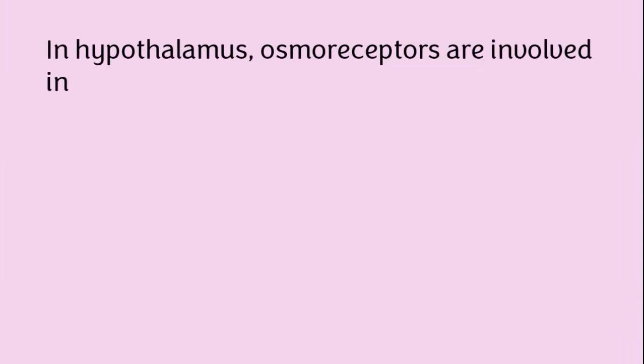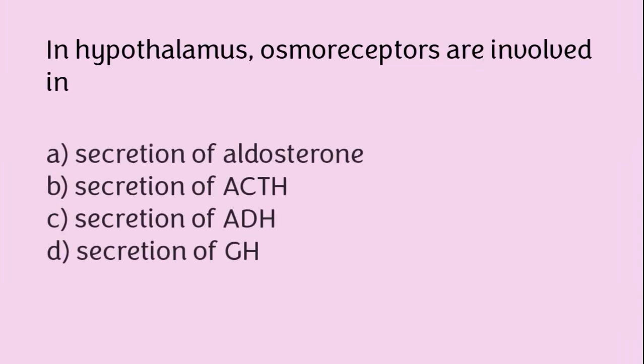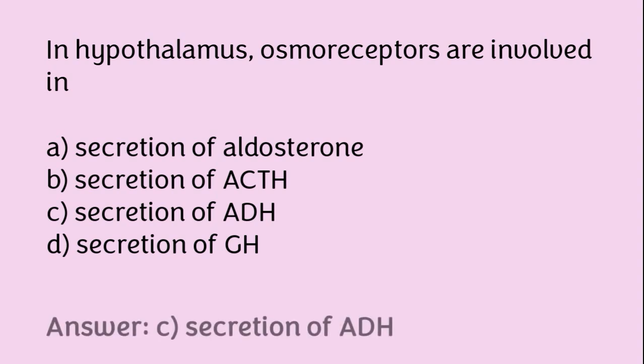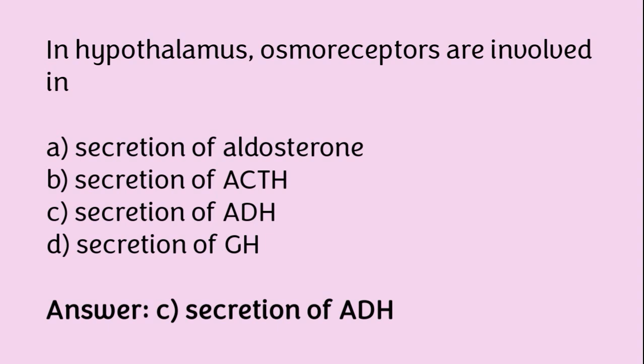In the hypothalamus, osmoreceptors are involved in: secretion of aldosterone, secretion of ACTH, secretion of ADH, or secretion of GH? The correct answer is option C. In the hypothalamus, osmoreceptors are involved in secretion of ADH.